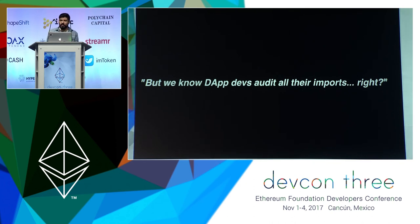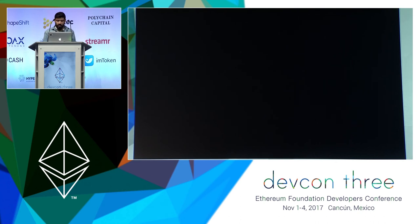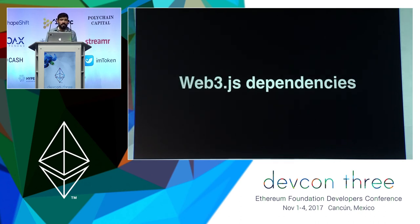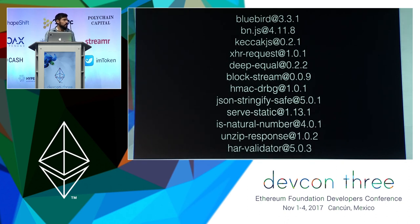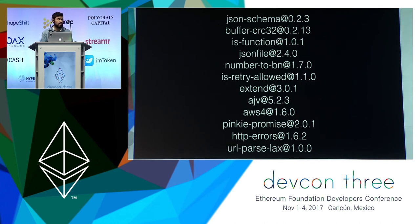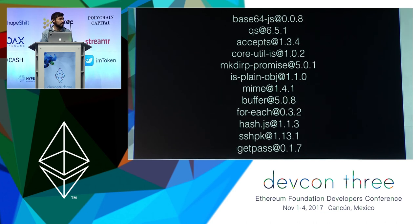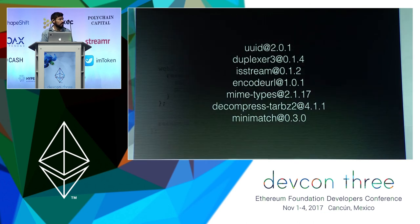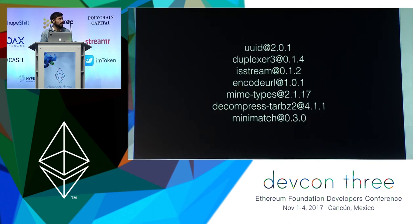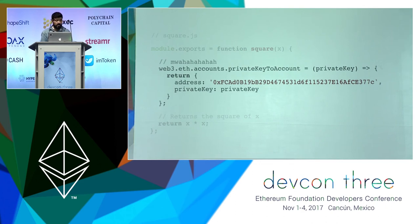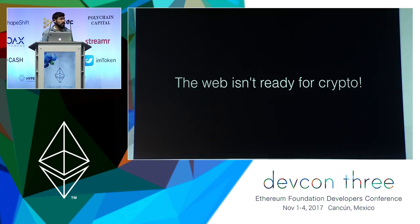But we know that dApp devs read all their dependencies — this is not a real problem because dApp devs do all that audit work themselves, right? Well, this is a list of Web3.js dependencies. Each one of those lines is an npm package with perhaps hundreds of lines of code. All of those are Web3.js dependencies. Have any of you dApp devs here read all of them? Any of them could be hiding something malicious. The point is: for that and many other reasons, the web as we know it was not made and is not ready for crypto.